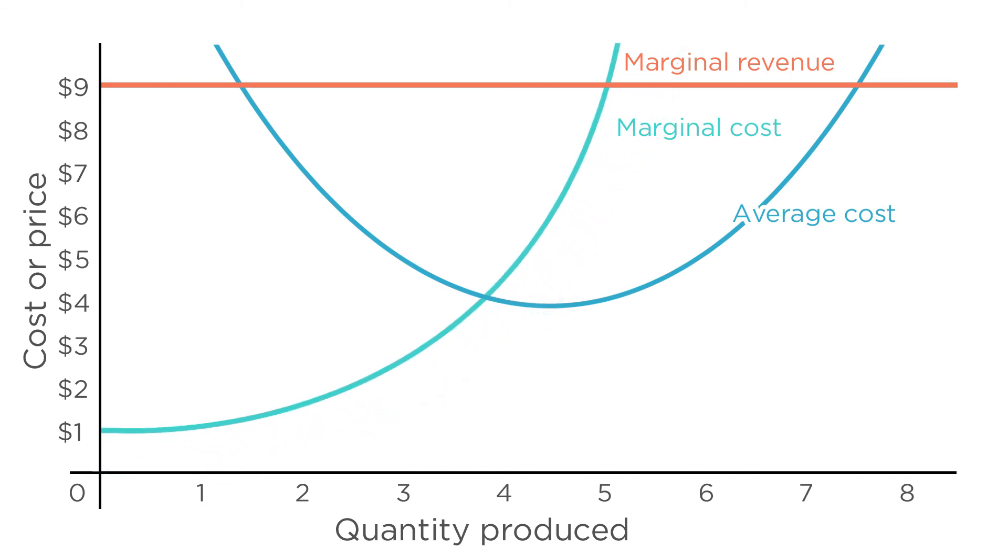Once again, wherever marginal costs crosses marginal revenue. This now happens here at five units. Is the firm still profitable? Yes, because average cost is still below the marginal revenue. So each unit sells for more money than the cost of making it.